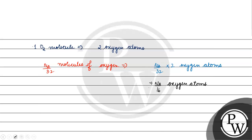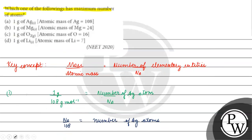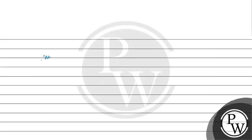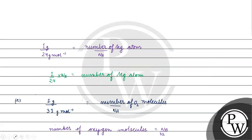The last option is 1 gram of lithium. The atomic mass of lithium is 7 gram per mole. So the number of lithium atoms will be equal to Avogadro's number divided by 7, that is Nₐ/7.